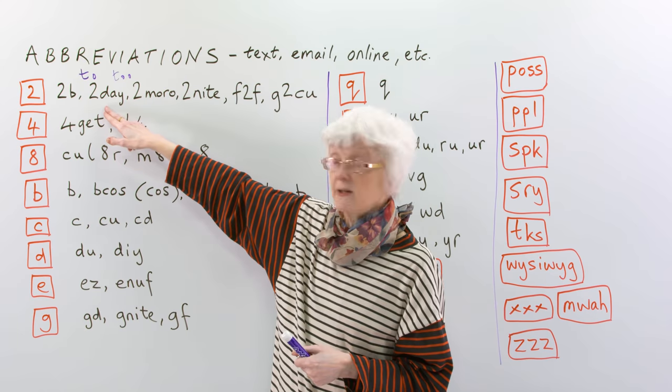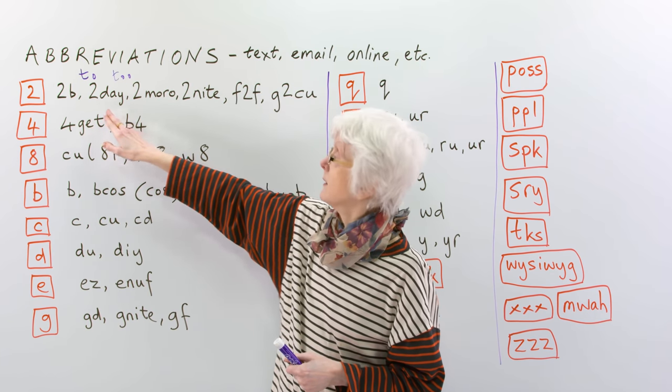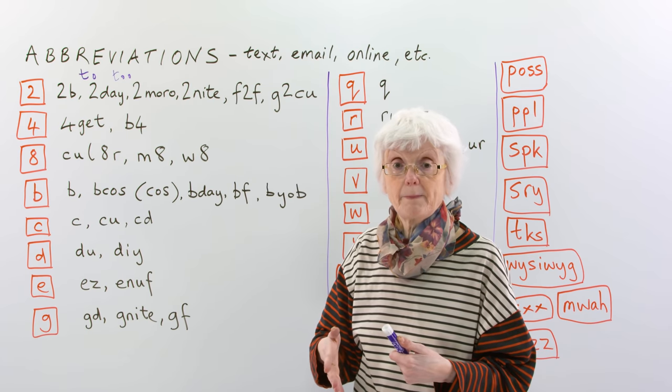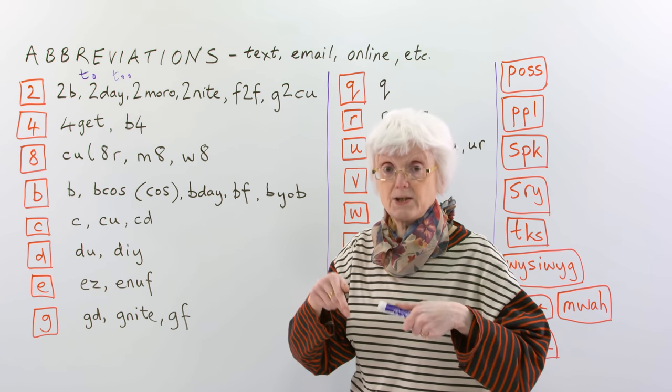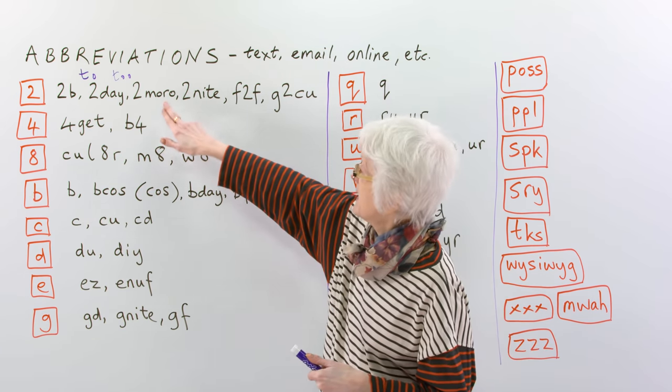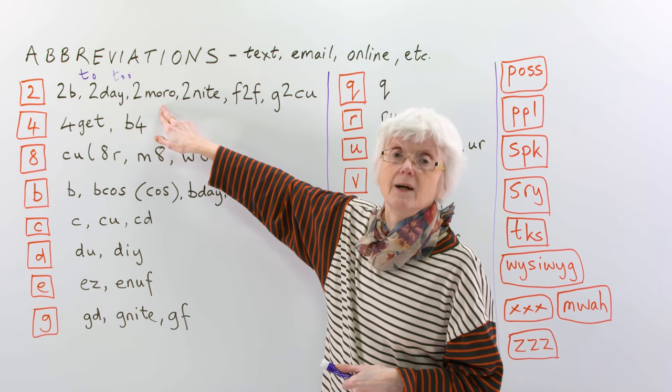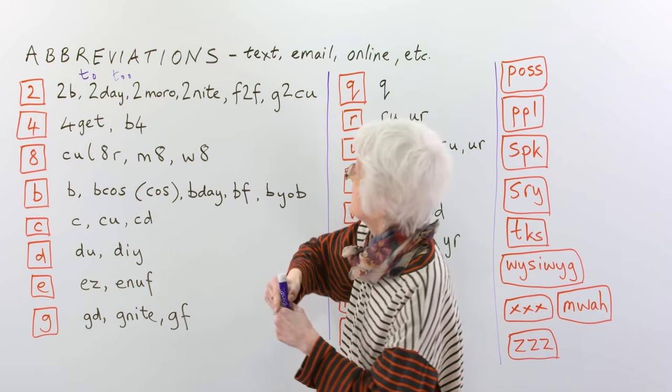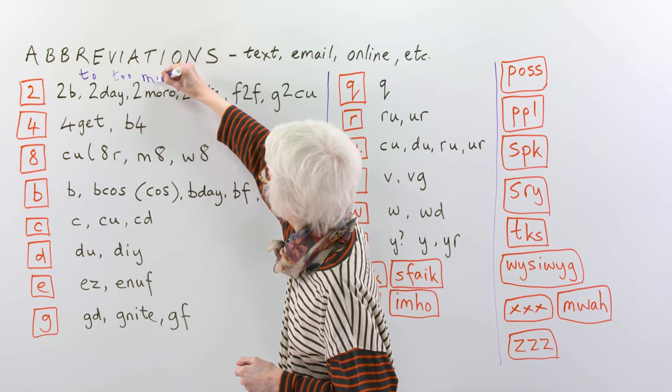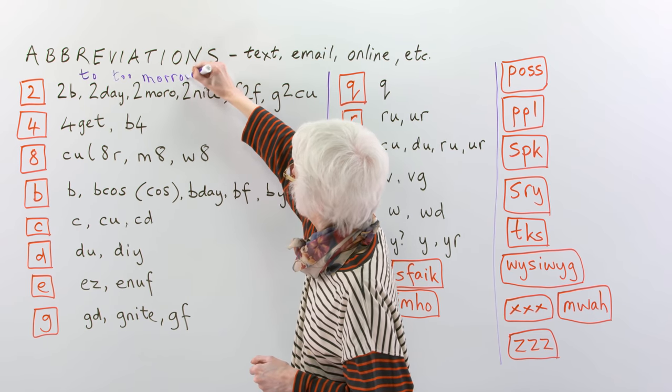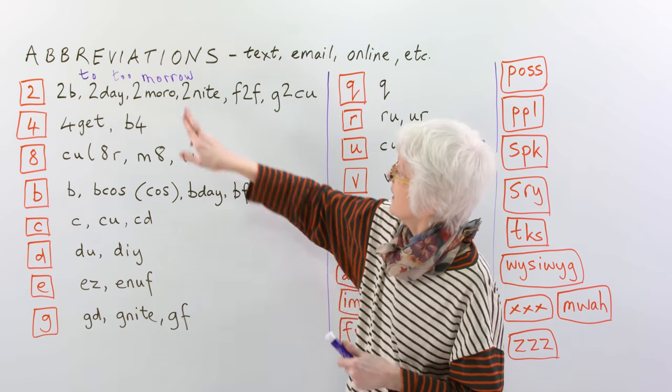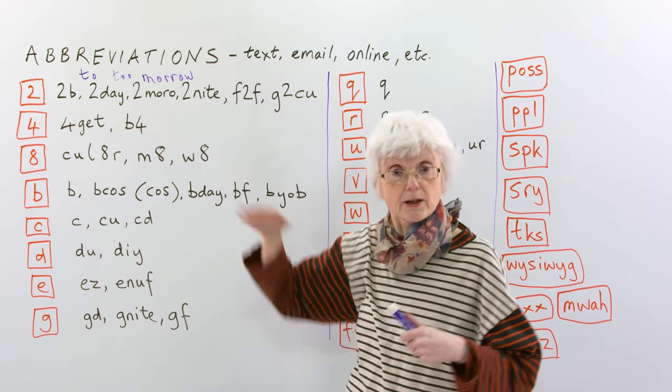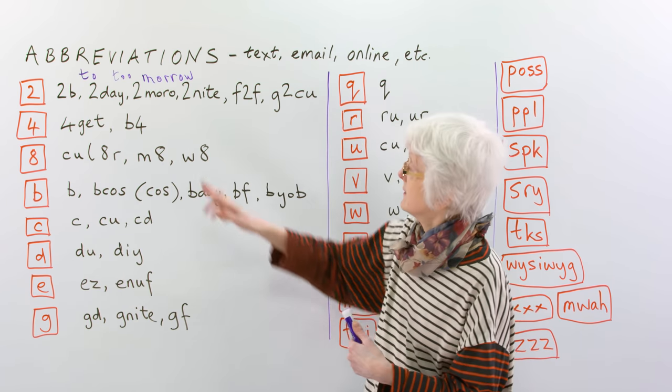Can you read this one? To-day. So, that means to-day, on this day, to-day. And then this one, to-morrow, so it's not spelt the usual way, to-morrow, but again, that's to make it shorter, to-morrow, it's a kind of phonetic spelling, to-morrow.